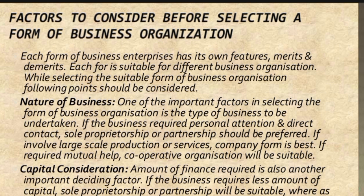We have discussed a lot of videos. First of all, we discussed business organization and management — the basic meaning of these three words and a few features. Then we discussed the forms of business organization: sole proprietorship, partnership, LLP, joint stock company, Hindu undivided family business, cooperative society, public company, private company, OPC, and all these things.